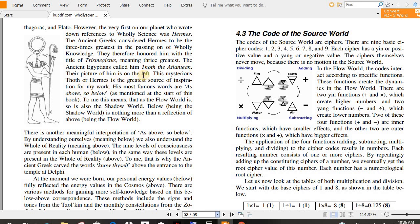The ancient Egyptians called him Thoth the Atlantean. Their picture of him is on the left. The mysterious Thoth, or Hermes, is the greatest source of inspiration for my work. His most famous words are, as above, so below.